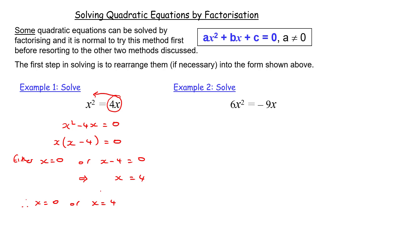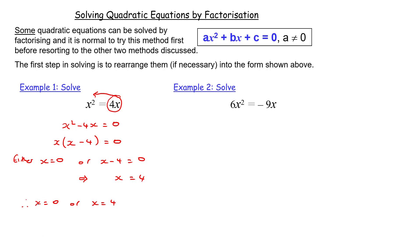Those are the two solutions. As a quick check — you don't need to write this part down — if x equals zero then zero equals zero, and if x equals 4 then 4 squared is 16, and 4 times 4 is 16. So it works out.